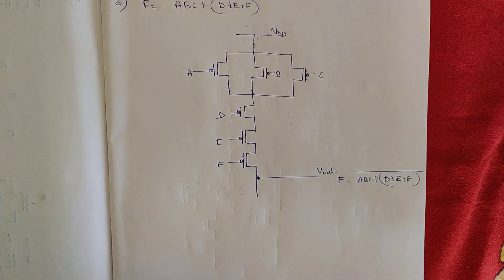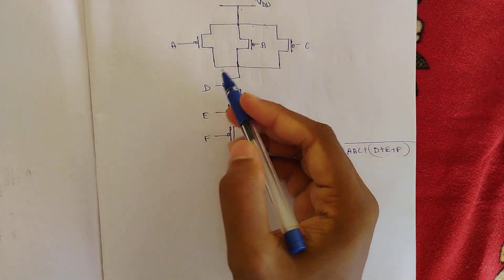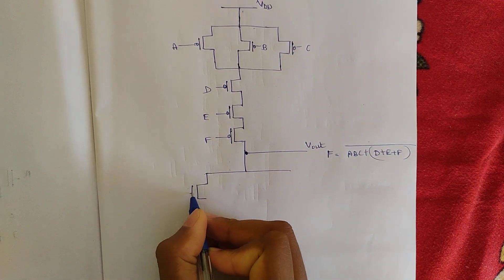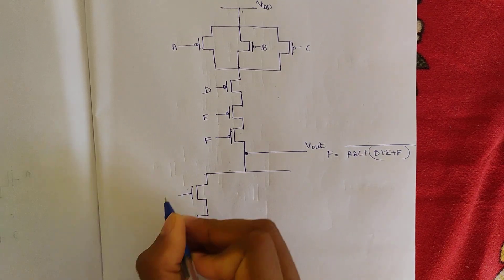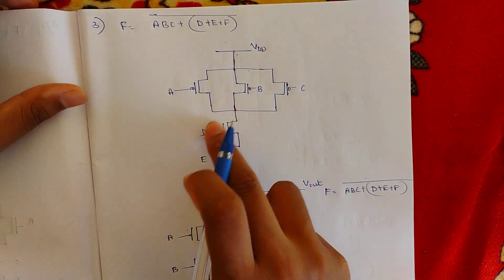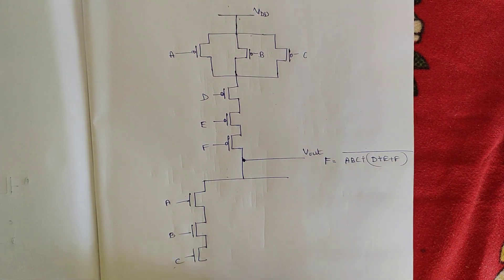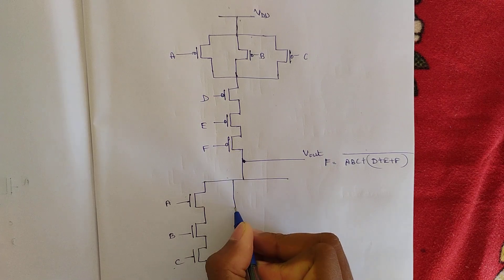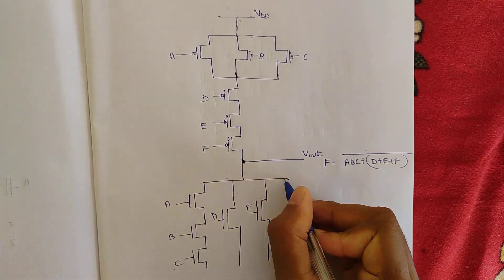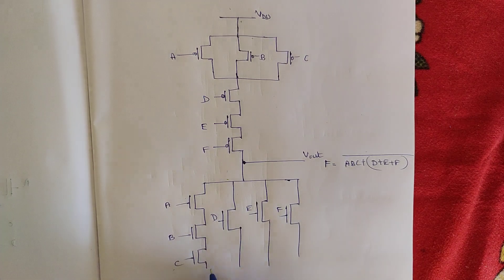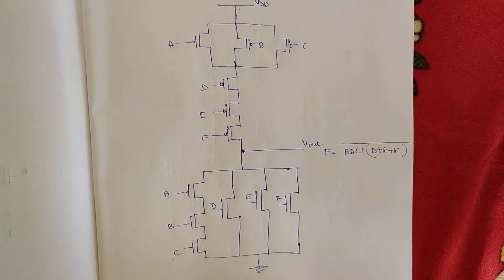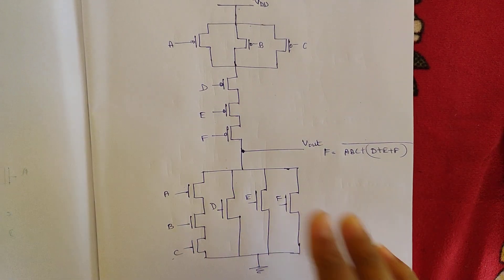For the NMOS pull-down part, just the opposite: A, B, C were in parallel in PMOS so put them in series for NMOS — draw A, B, C in series. D, E, F were in series in PMOS so put them in parallel for NMOS — draw parallel branches for D, E, and F, then connect them together and to ground. This is the complete pull-down circuit. The full circuit for this expression is complete.